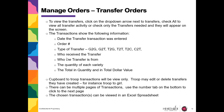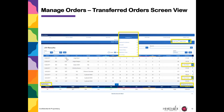Cupboard to Troop transactions will be view only. Troops may only edit or delete transfers they have created — for instance, Troop to Girl transactions. There can be multiple pages of transactions, and you can also export them to an Excel spreadsheet. You click on Transfers and select the types that you want to see, and you can filter by date and export the information to Excel.